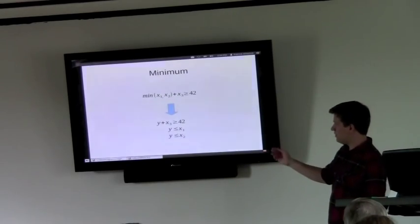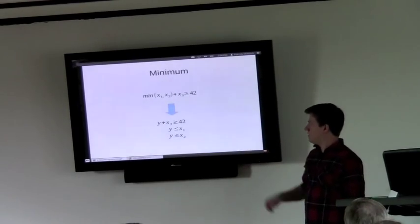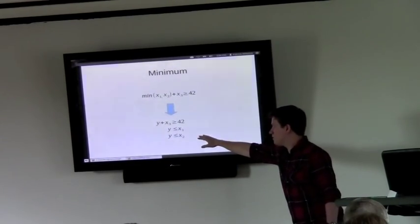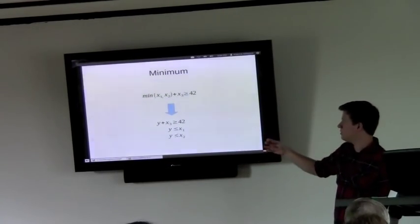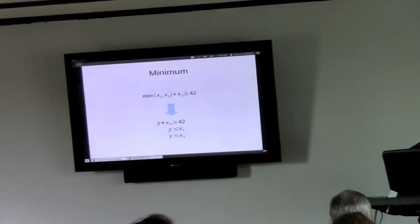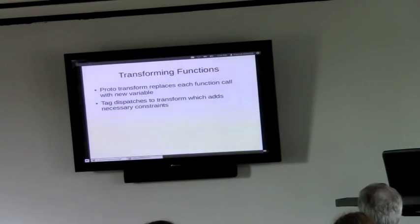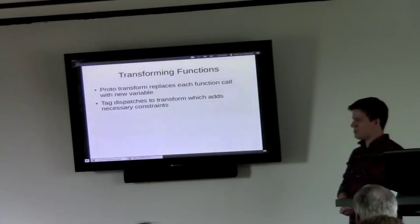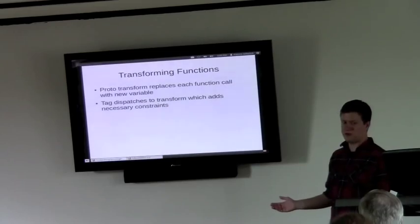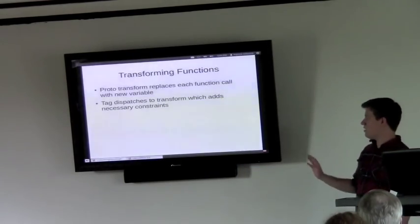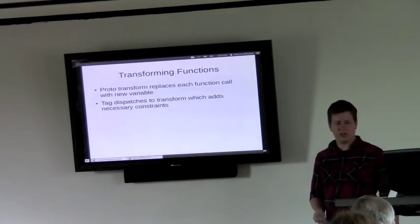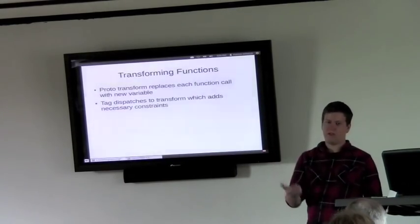And basically the way that we handle these is we replace that function with a new variable. Let's say y. And then we put constraints on y so that it matches the behavior of that function. So for absolute value of x, basically this is defined by two lines, plus x and minus x. And everything up there is in the feasible region, at least as far as this function is concerned. So we can replace absolute value of x with a new variable y and then add two constraints. So y is greater than positive x and y is greater than negative x. And this accomplishes the same thing for the purposes of our optimization.